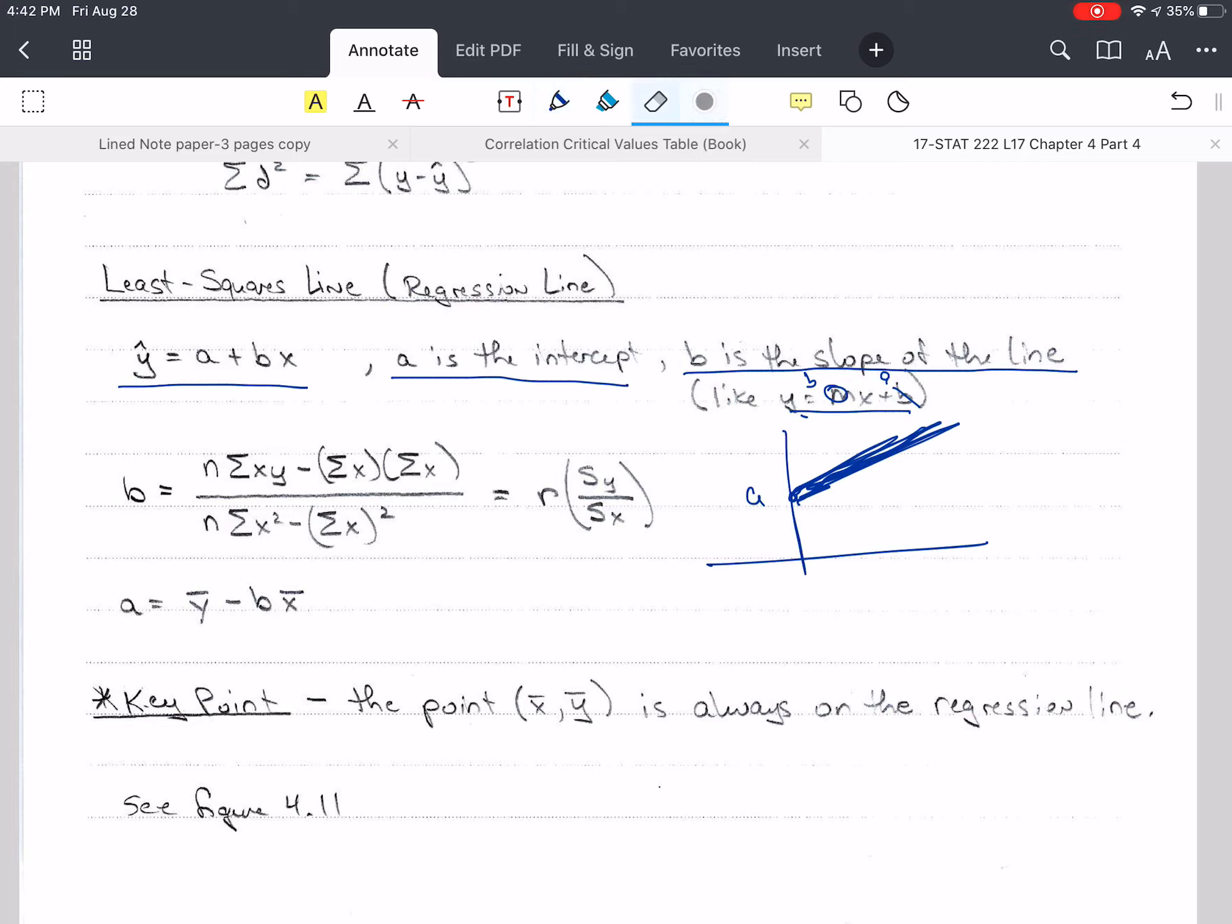How do we calculate a and b? b is using this formula. The numerator here is from the numerator of the correlation coefficient, and this denominator is from the numerator of our sample variance, s squared. If we don't have the standard deviations of the x values and the y values, we can use this formula for b. If we do have the standard deviations and the correlation coefficient, we can use this equation. The caution is we have to keep all the decimal places for s sub y and s sub x and r, or else we get rounding error.